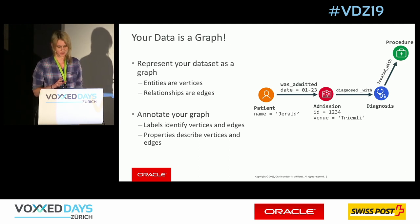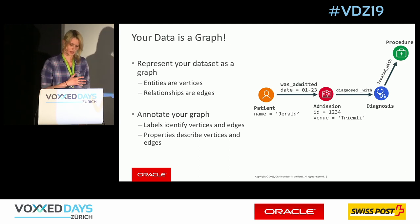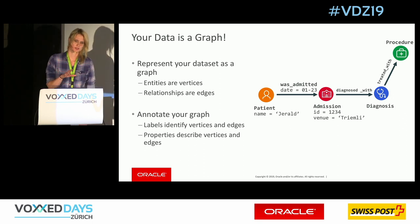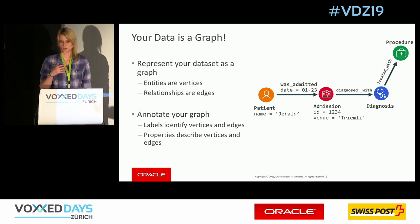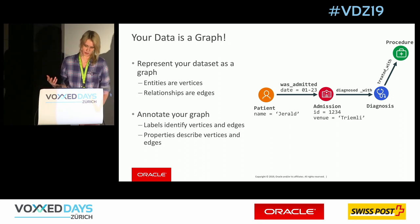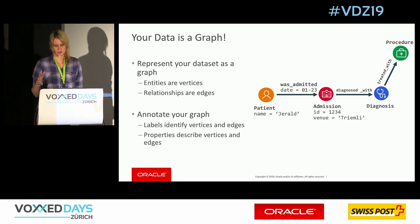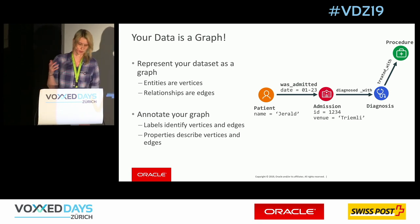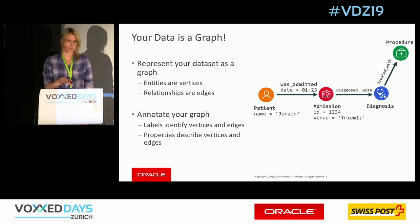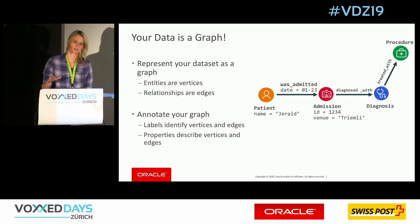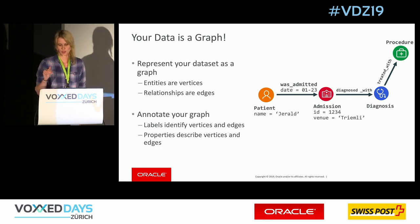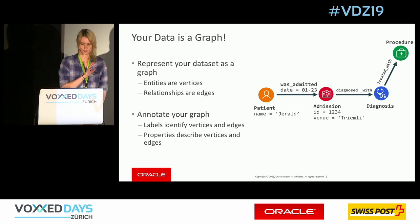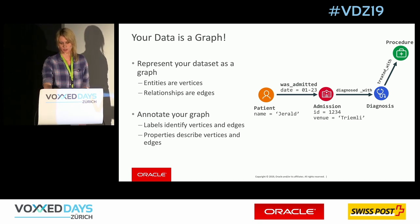This is the graph model we're going to use throughout this talk. We have patients with some properties, then admissions — meaning patients are admitted to a venue — with properties like ID and venue, and an edge in between that could have a date. After admission, a patient gets a diagnosis with the edge 'diagnosed with', and based on that, a procedure.